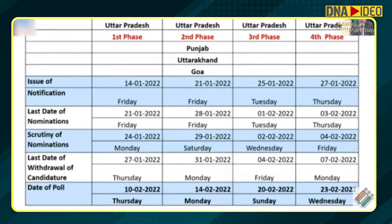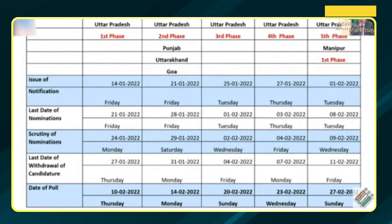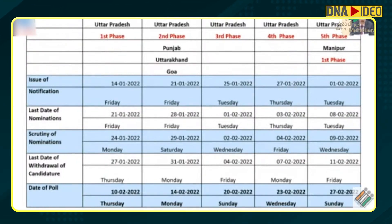The fifth phase covers Uttar Pradesh fifth phase and Manipur first phase. Manipur will be done in two phases. Issue of notification: 1st February. Last date of nominations: 8th February. Scrutiny of nominations: 9th February. Last date of withdrawal of candidature: 11th February. Date of poll: 27th February 2022.